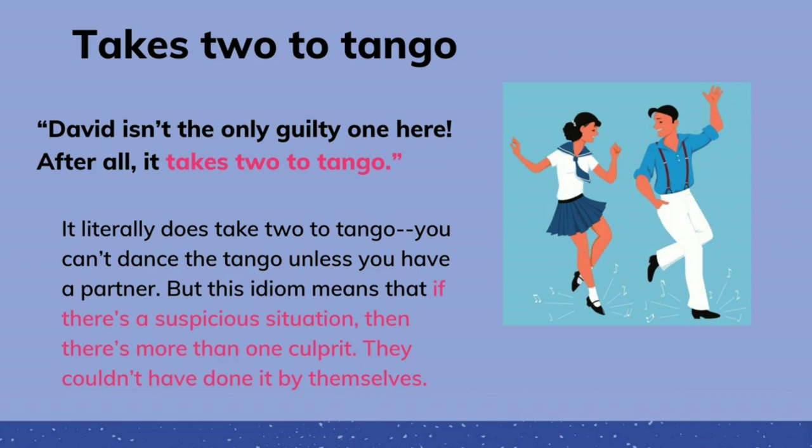Takes two to tango. 'David isn't the only guilty one here. After all, it takes two to tango.' It literally does not take two to tango — you can't dance the tango unless you have a partner. But this idiom means that if there's a suspicious situation, then there's more than one culprit. They couldn't have done it by themselves.